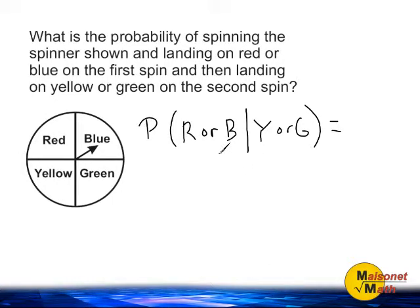Let's start by figuring out what the probability of landing on red or blue is on our first spin. Red and blue represents one half of our spinner. So the fraction representing the probability of landing on red or blue with the first spin is one half.